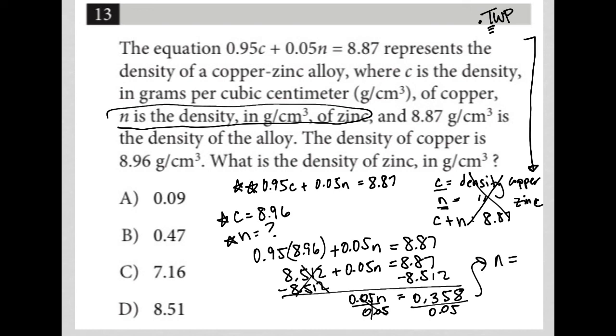N is equal to, again, my calculator, 0.358 divided by 0.05, and I'm getting 7.16, and therefore, the correct answer here is choice C.